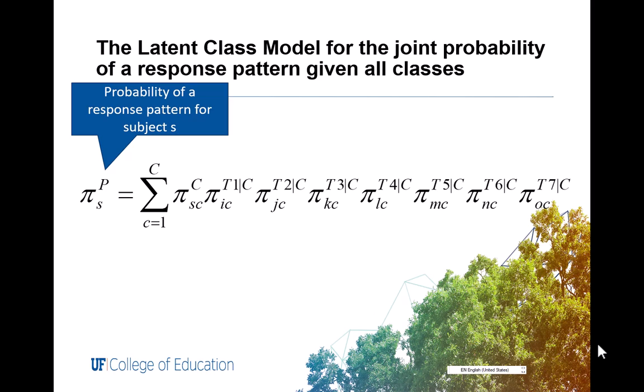there are seven indicators that are represented here for members of class C. You can also represent the joint probability of a response pattern given all classes,